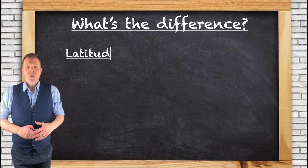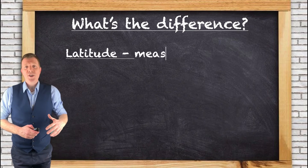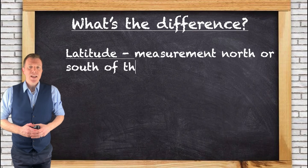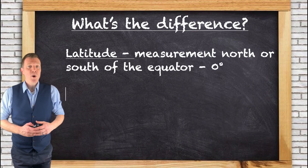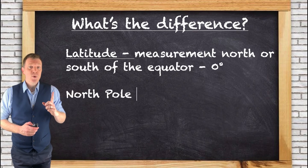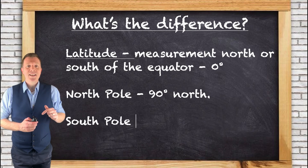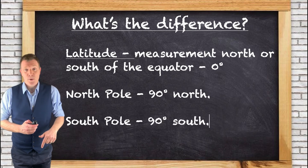Latitude is the measurement of distance north or south of the equator. The equator is at zero degrees of latitude, whilst the latitude of the north pole is 90 degrees north, and the south pole is 90 degrees south.